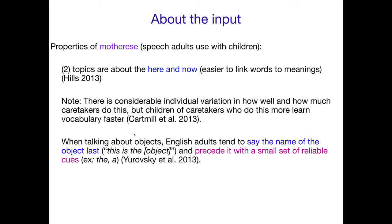Another interesting property concerns the form that English adults tend to use. When talking about objects, English adults tend to say the name of the object last — like 'this is the kitty,' 'look at the kitty,' 'what a nice kitty' — so 'kitty' is the last thing you're hearing. In English, adults also tend to precede that object label with a small set of reliable cues like 'the,' 'a,' or 'that.' These form cues help children figure out which word refers to the thing that's sharing their attention.